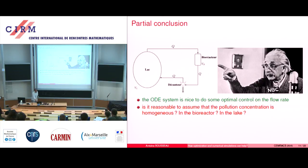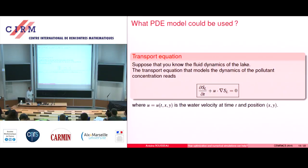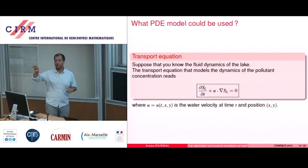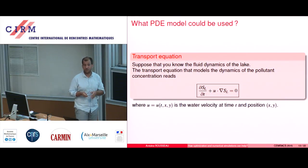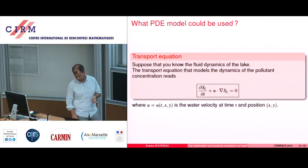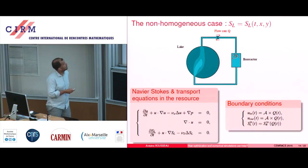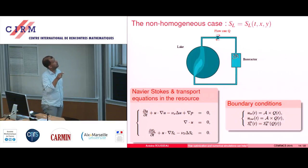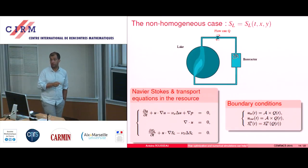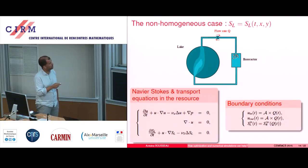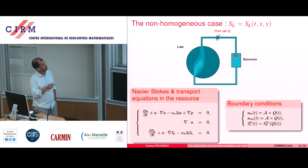So what we did was to provide a PDE-based system only for the lake. You can assume that the bioreactor is small, that you have something moving the fluid inside — an agitator or things like that — so you can imagine that the concentration in the bioreactor is constant, but not in the lake. In the lake, we have a Navier-Stokes equation — a 2D Navier-Stokes for incompressible fluid — and a transport-diffusion equation for the pollution, transported by the velocity U provided by the velocity field. And the boundary conditions are important because they couple U and S again.